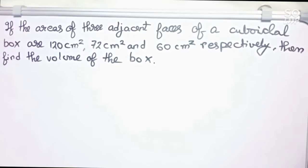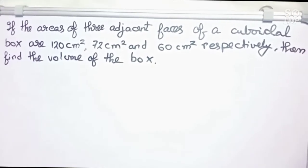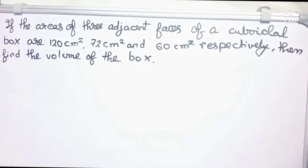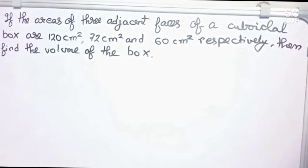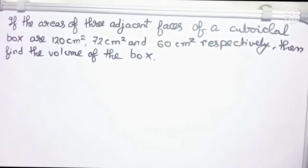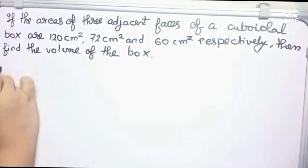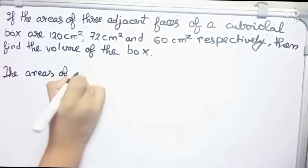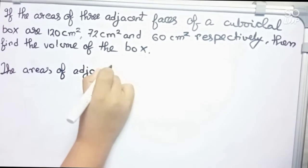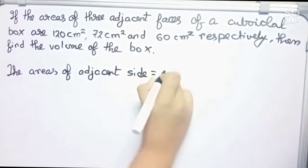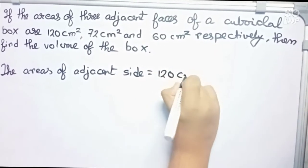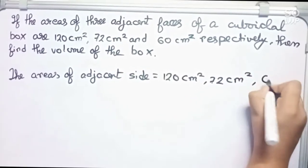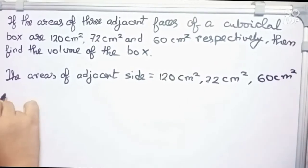Hello guys, welcome to this video. In this video, our question is: if the areas of three adjacent faces of a cuboidal box are 120 centimeters square, 72 centimeters square, and 60 centimeters square respectively, then find the volume of the box. So we start — the areas of adjacent sides equal 120 cm², 72 cm², and 60 cm².